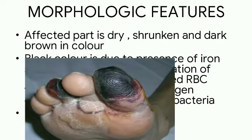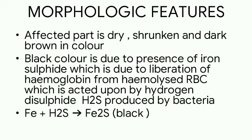The morphological features are that the affected part is dry, shrunken, and dark brown in color. The black color is due to the presence of iron sulfide, which results from liberation of hemoglobin from hemolyzed RBCs acted upon by hydrogen disulfide produced by bacteria. This reaction produces ferrous sulfide, which is black in color, making the affected area appear black and shrunk.